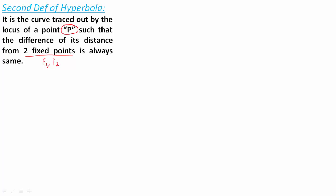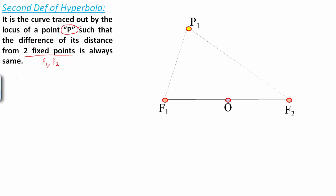To understand this definition we're going to take the help of a diagram. Let's have two fixed points F1 and F2, join them by a straight line, and name the center O. Now let's say we have a point P1 and we join P1 with F1 and P1 with F2. The definition says the distance difference — P1F2 minus P1F1 — is going to equal a constant. Similarly, for another point P2, P2F2 minus P2F1 is going to be equal to that same value.